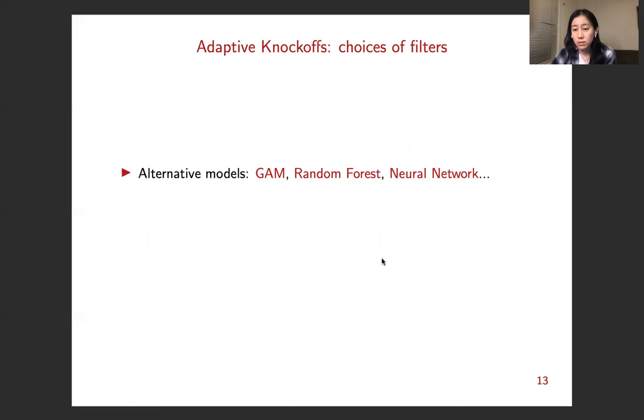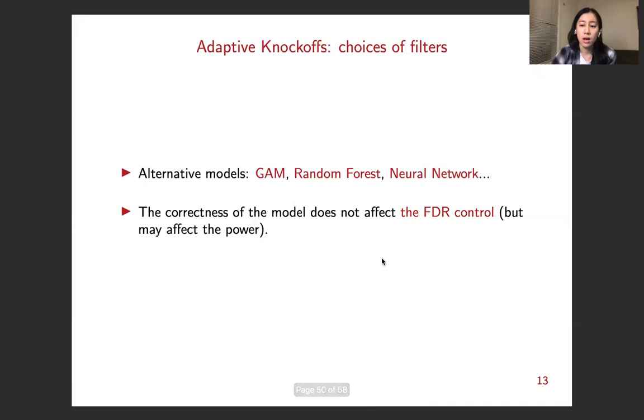So the previous example uses the GLM. Of course, we can use other models like GAM, random forest, and even neural networks. I have to stress that the correctness of the model does not affect the FDR control as long as the measurability condition is satisfied. But it may affect the power if the model cannot effectively use the side information. But on the other hand, if it can effectively use the side information, there will be a great power boost.